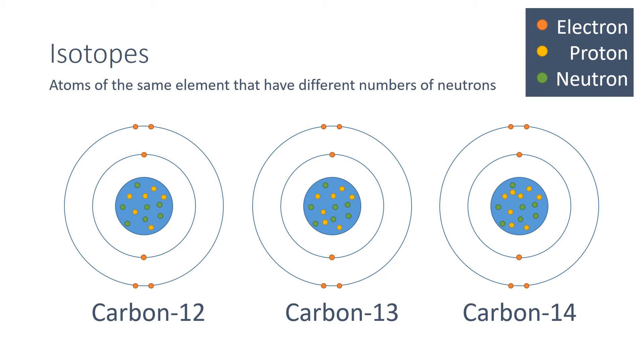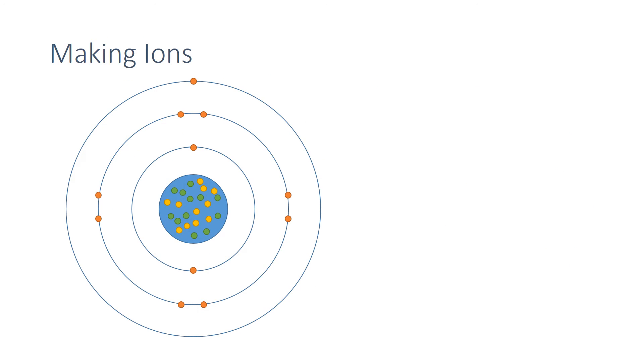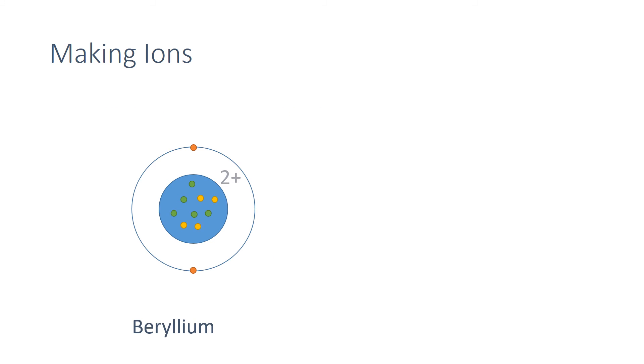As well as changing the number of neutrons, you can also change the number of electrons. As electrons have a negative charge, losing one gives the atom an overall positive charge. In this example, sodium lost one electron and thus gained an overall charge of plus one. Here however, beryllium has lost two electrons and therefore gains an overall charge of plus two.